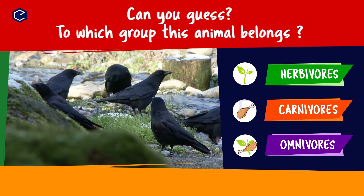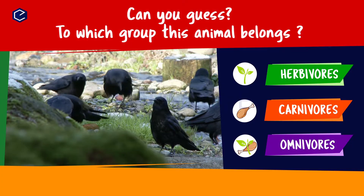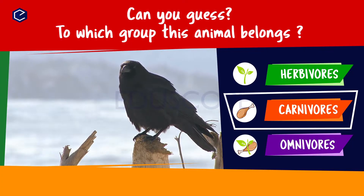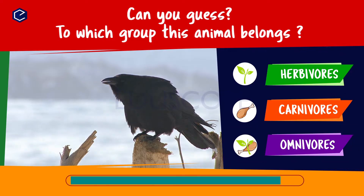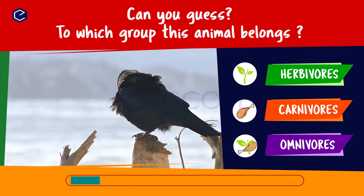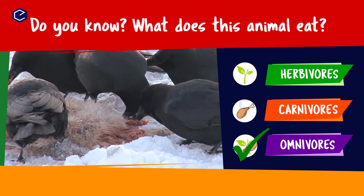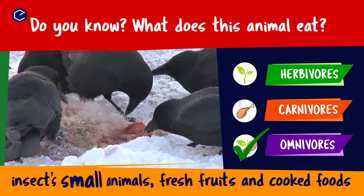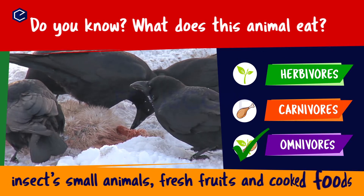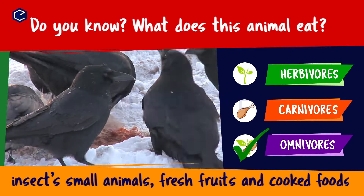Can you guess to which group this animal belongs? Herbivores, carnivores, omnivores. Do you know what this animal eats? A crow eats insects, small animals, fresh fruits and cooked foods. So crow is an omnivore.